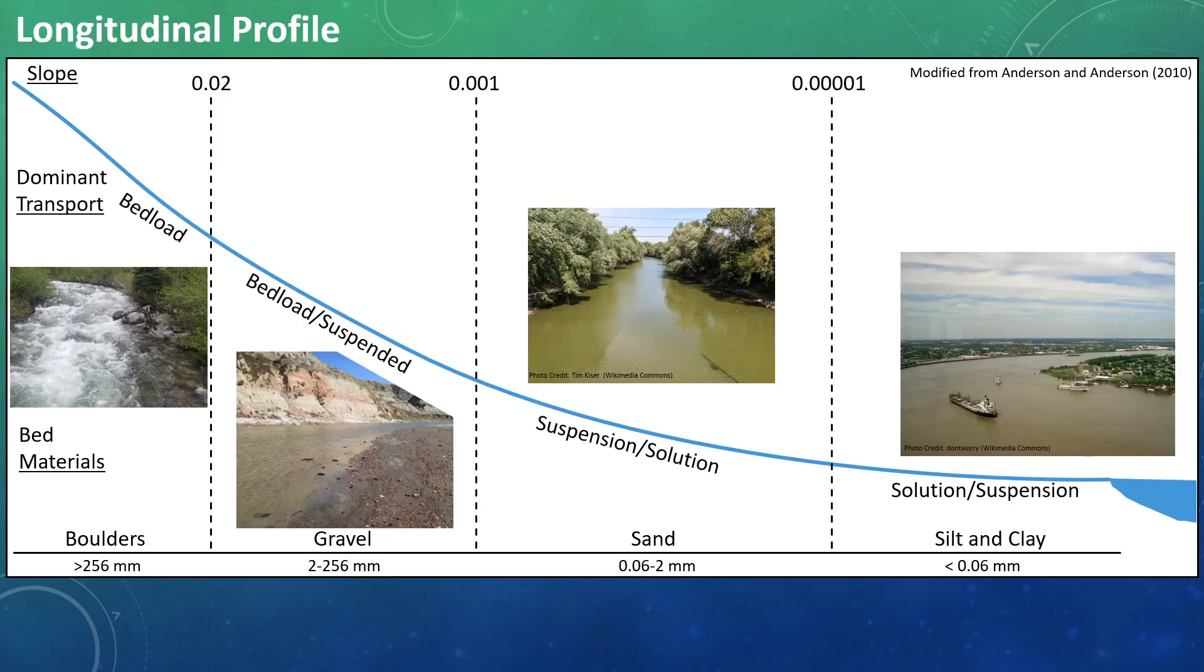And here we can see what those look like in picture form. The first image comes from a stream in the Grand Tetons in the United States. We can see just how turbulent and choppy the water is here,